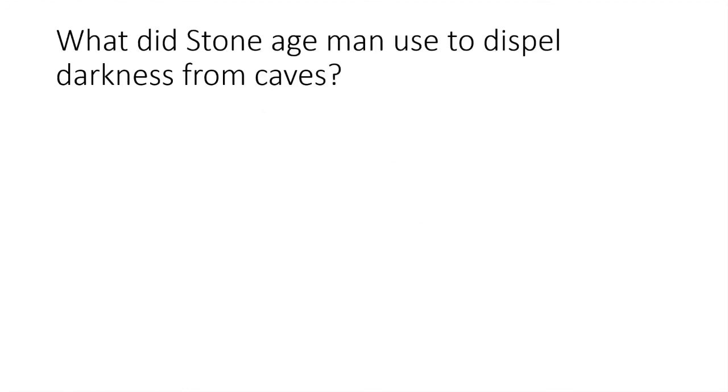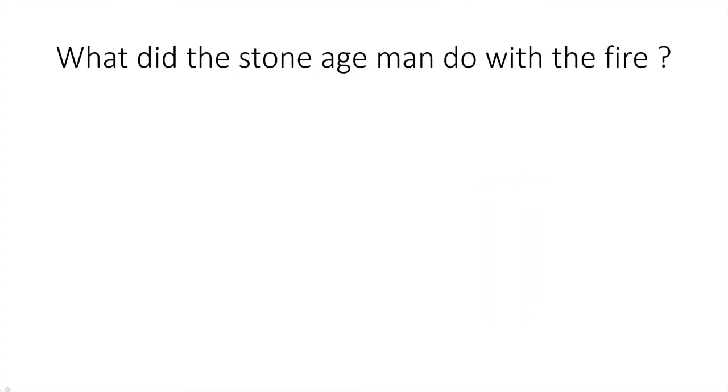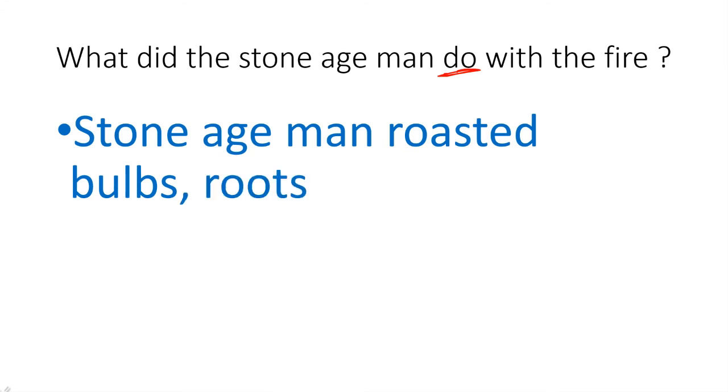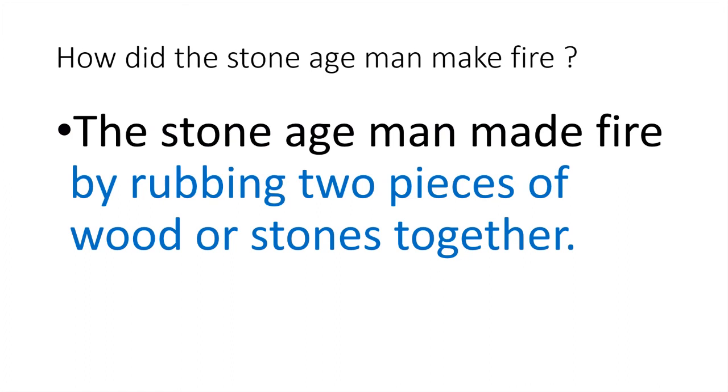What did Stone Age man use to dispel darkness from caves? Stone Age man used fire to dispel darkness from caves. What did the Stone Age man do with the fire? Stone Age man roasted bulbs, roots and raw flesh in the fire. How did the Stone Age man make fire? The Stone Age man made fire by rubbing two pieces of wood or stones together.